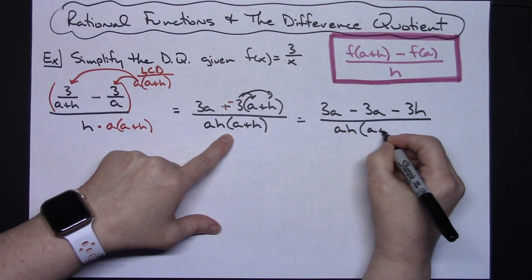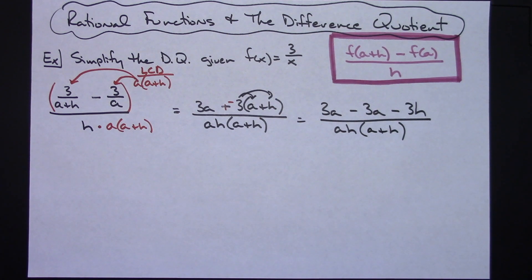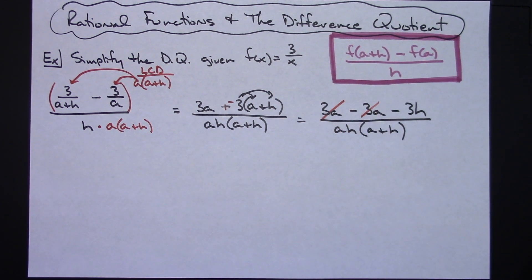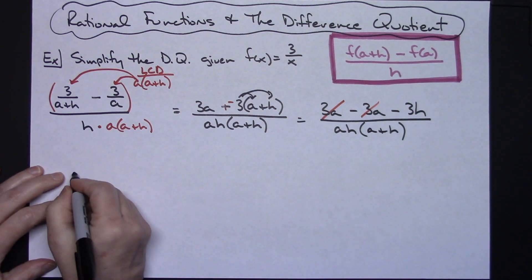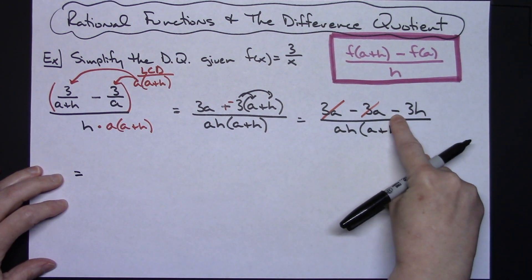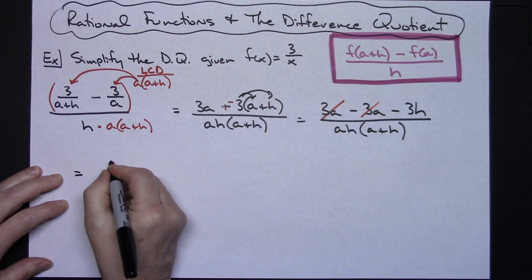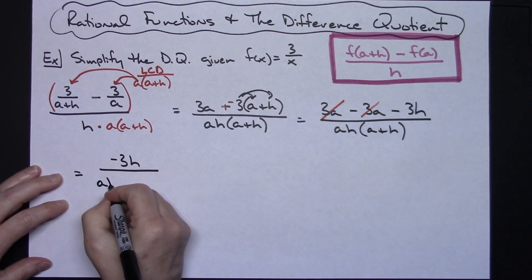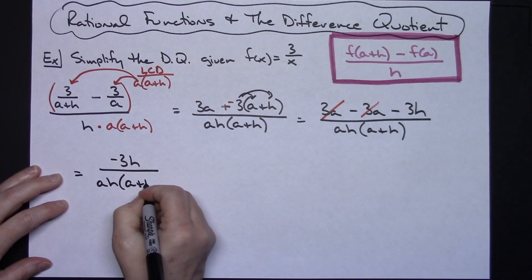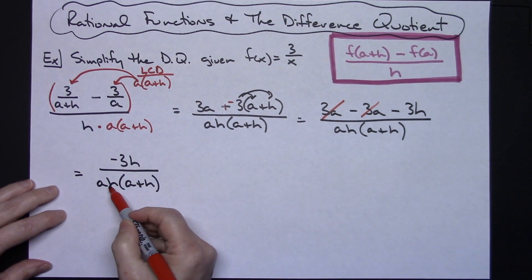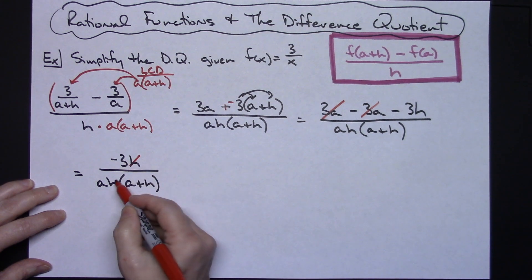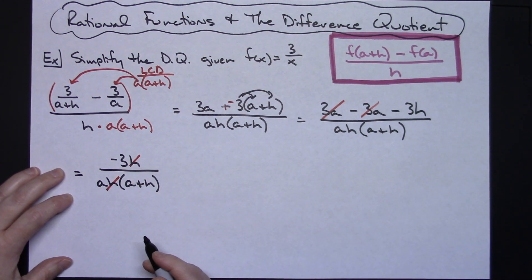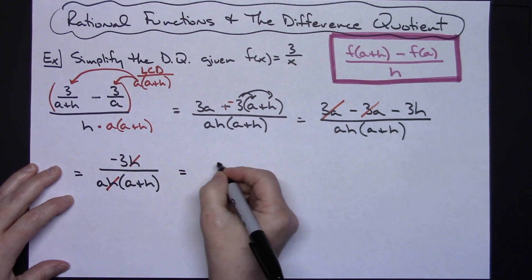Looking at this numerator, 3a minus 3a, those two things are going to cross out. Now I am going to rewrite before I do any more simplifying. I've got a negative 3h left on top and then I've got an a times an h times an a plus h. Not distributing because as you can see those h's now are going to cross out. If you would have distributed that it would have been harder to see that the h's would have crossed out.